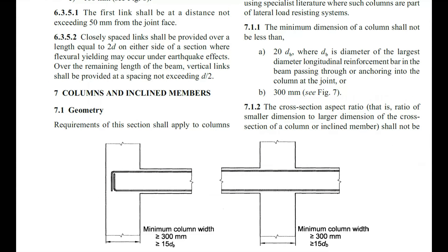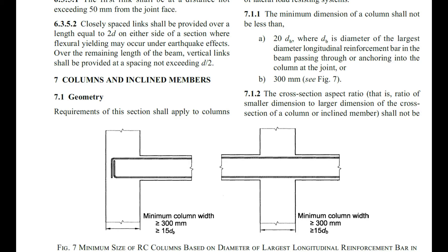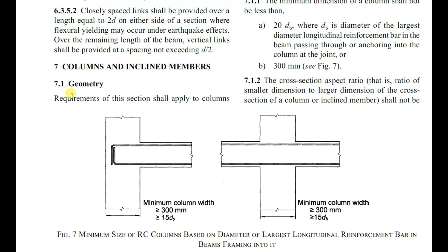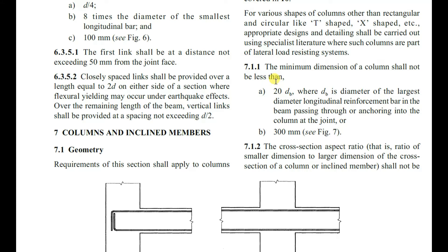The first criterion is size of the column. IS 13920-2016, clause 7.1.1, specifies the minimum dimension of the column shall not be less than 20dB, where dB is the diameter of the largest longitudinal reinforcement bar in the beam passing through or anchoring into the column at the joint, or 300 mm — whichever governs. So a minimum of 300 mm width must be provided for ductile detailing.